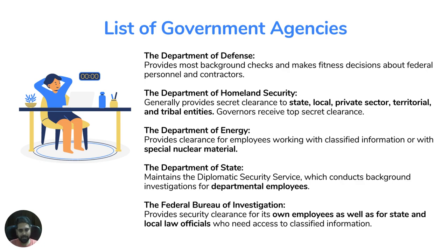The Department of Defense is the major decision-maker, providing 80–90% of security clearances. The Department of Homeland Security provides clearance for state, local, private sector, terrorism, and tribal entities. The Department of Energy provides clearance when candidates work on special nuclear material, research, programming, or administration — these are known as L clearance and Q clearance.